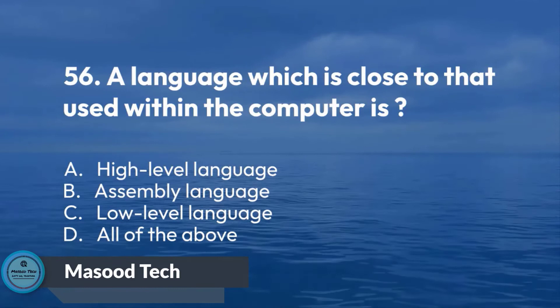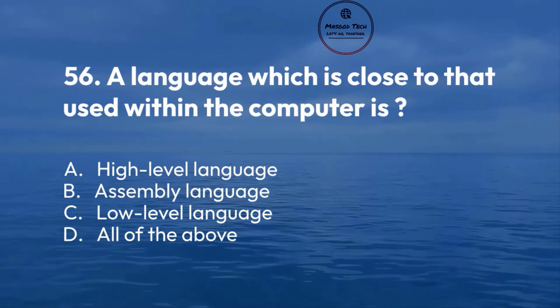Number 57. Which is a unit representing the number of bits of discrete information? A. Baud. B. Byte. C. Bit. D. All of the above. Correct answer is A.